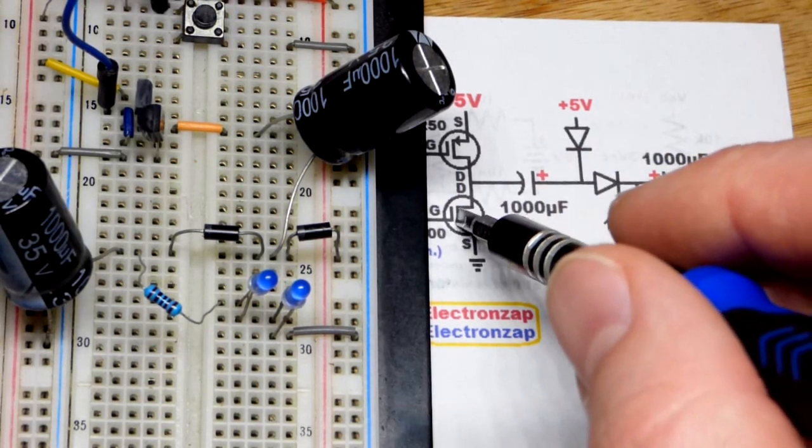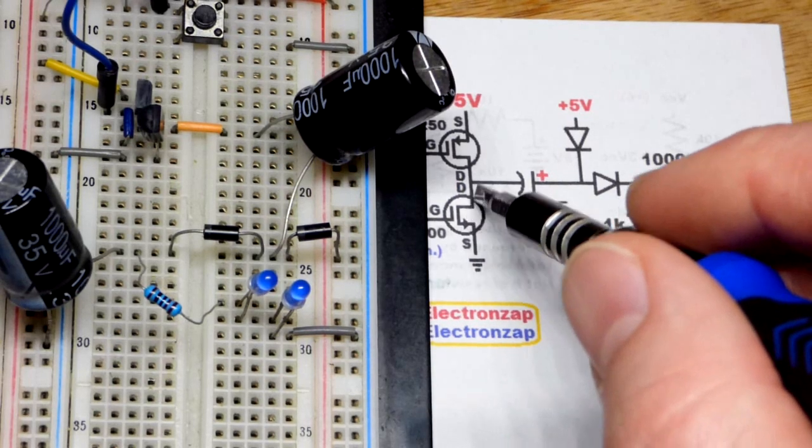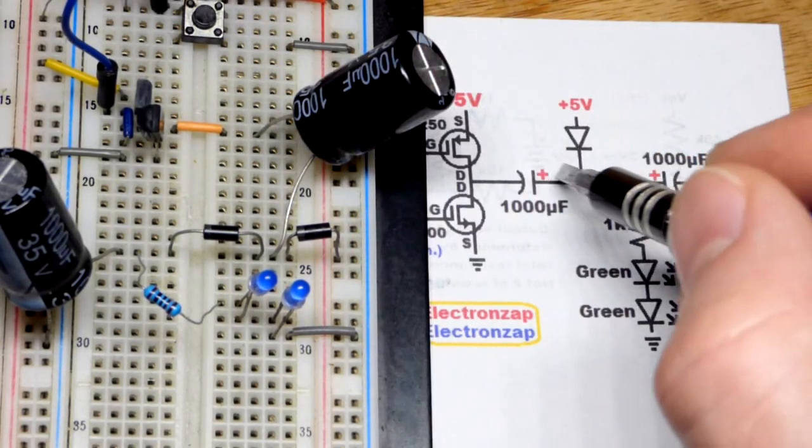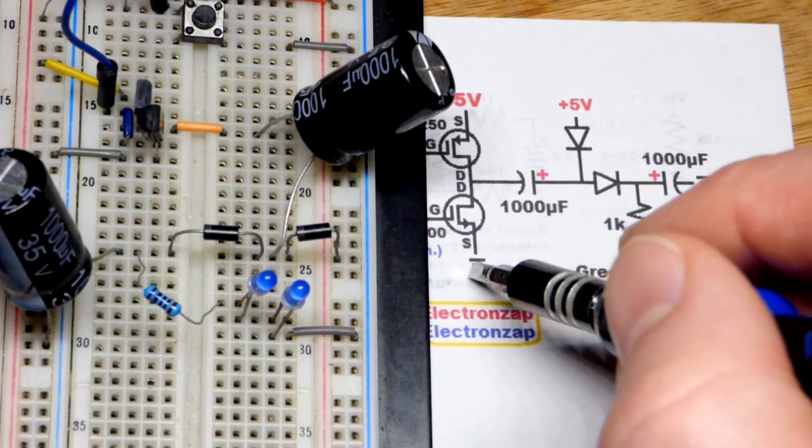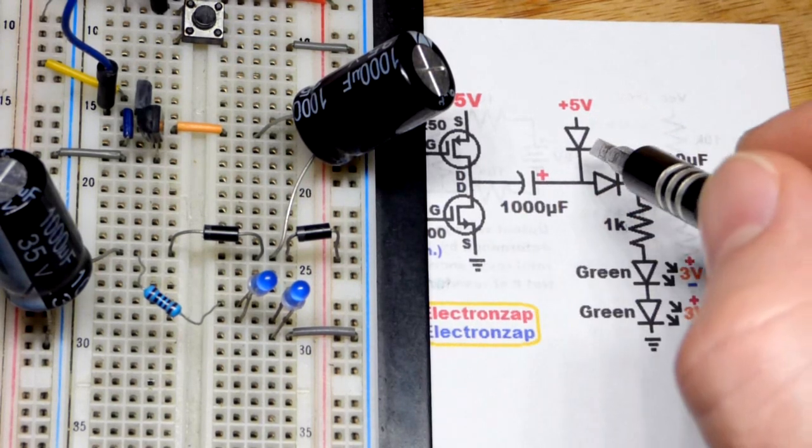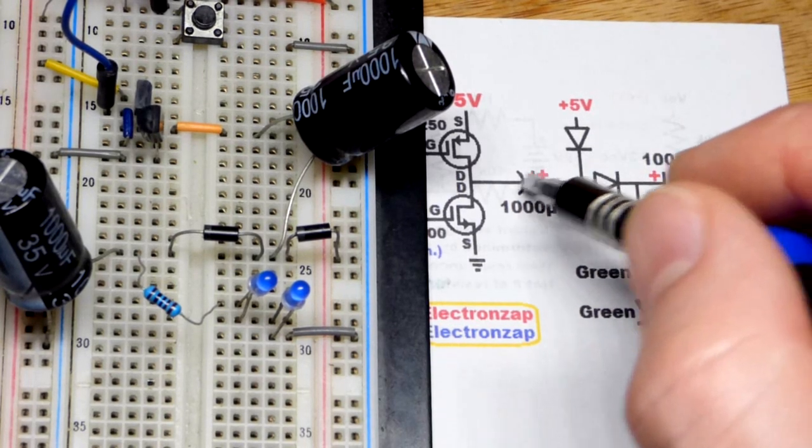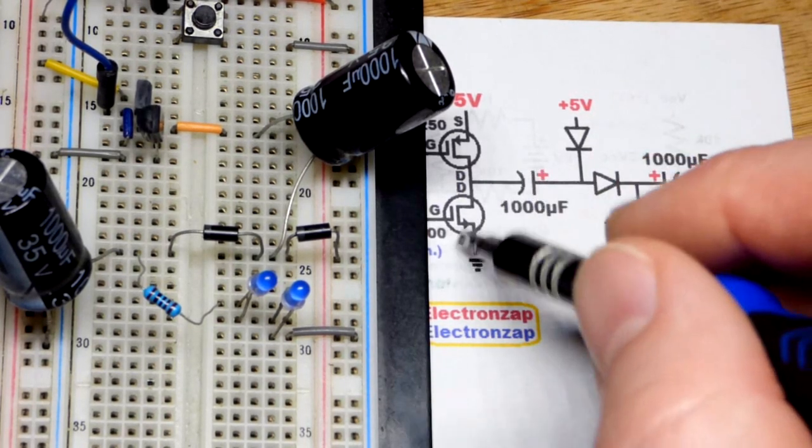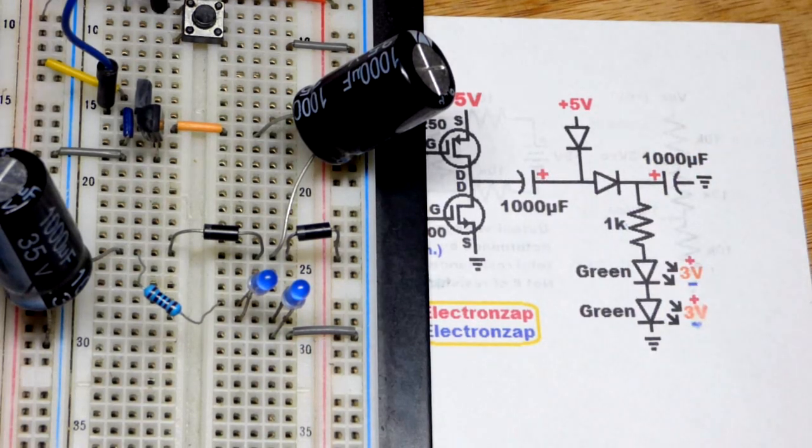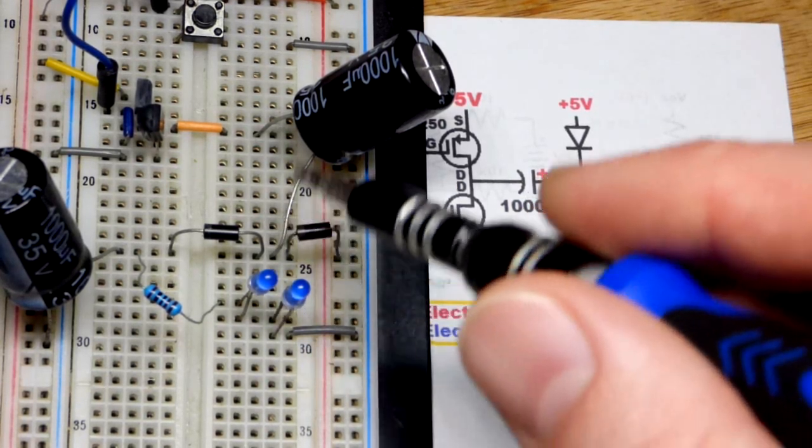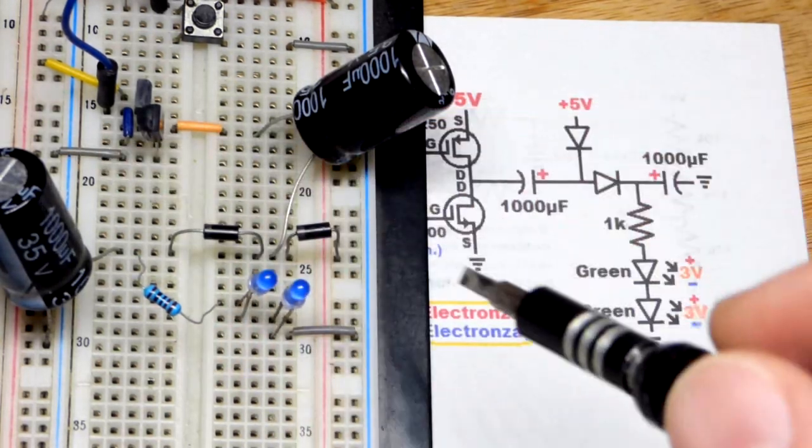When the transistor here, the 2N7000 is on, which it is most of the time in this circuit. We'll talk about that coming up. So that charges that capacitor. It makes a direct connection to ground for the most part. So we got 5 volts minus about 0.6 approximately. So a little more than 4.4 probably that capacitor will charge up to. You can see that right there when we're connected to ground.